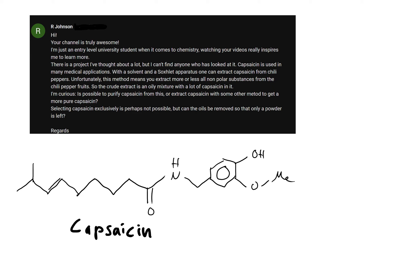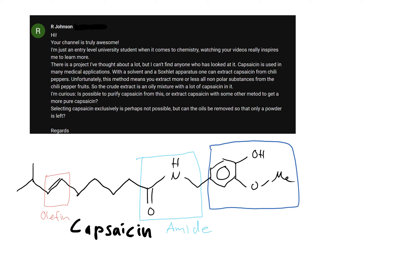Now, let's take a look at the functional groups that are present. We can see that capsaicin is first of all an amide, which means that it is hydrolyzable under either acidic or basic conditions at elevated temperature. Next, we see that it is olefinic, meaning it contains a double bond. We can also see that it is aromatic and has a phenyl group attached to it.